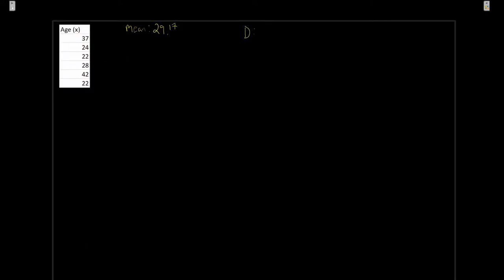Moving on into our measures of dispersion — we've taken a look at a few different ways to measure where our data is located on the number line. We looked at measures of position, where the whole thing is positioned with our mean and median, and then different locations with our percentiles.